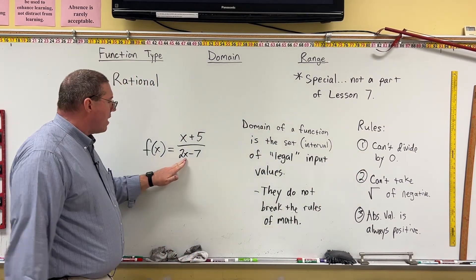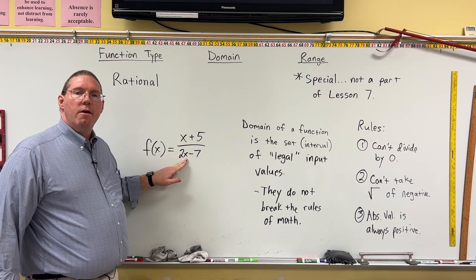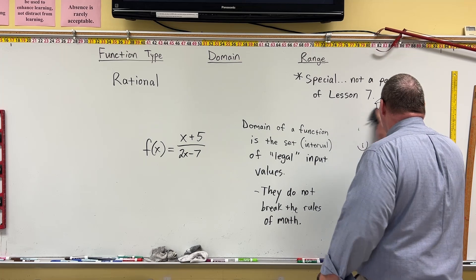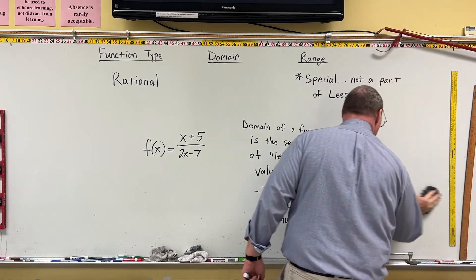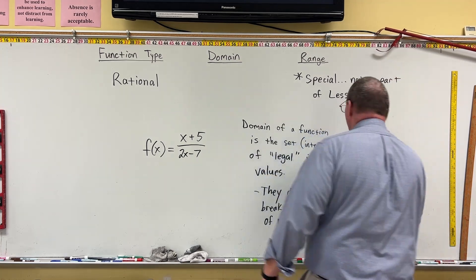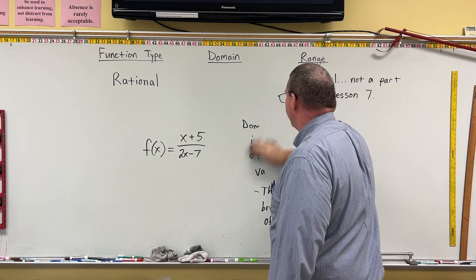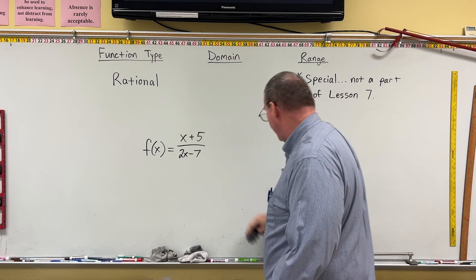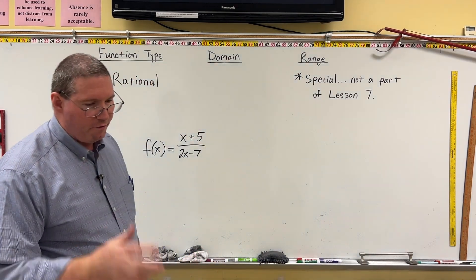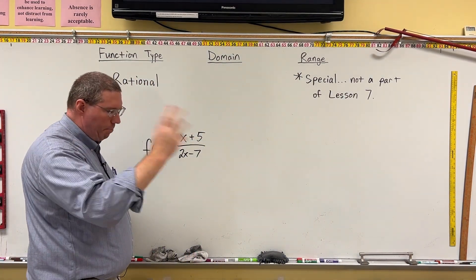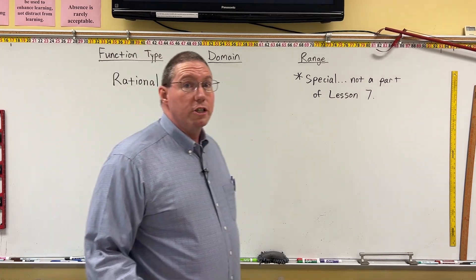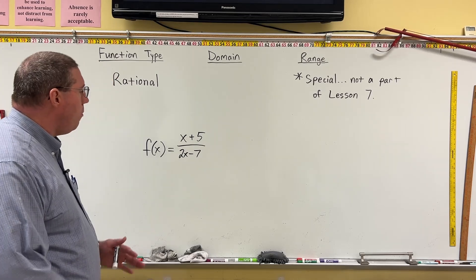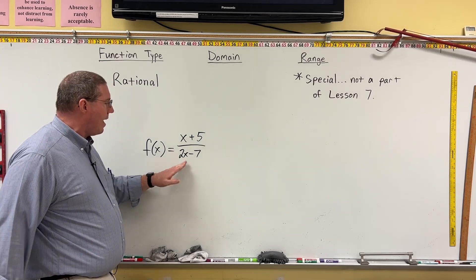The rule we want right now is: you can't divide by zero. So we want to know what numbers can I plug in for x. Here's typically what I want to ask: can I plug in negative numbers — numbers moving toward negative infinity? Can I plug in numbers close to positive infinity? Can I plug in zero? And is there some number that I can't plug in at all?